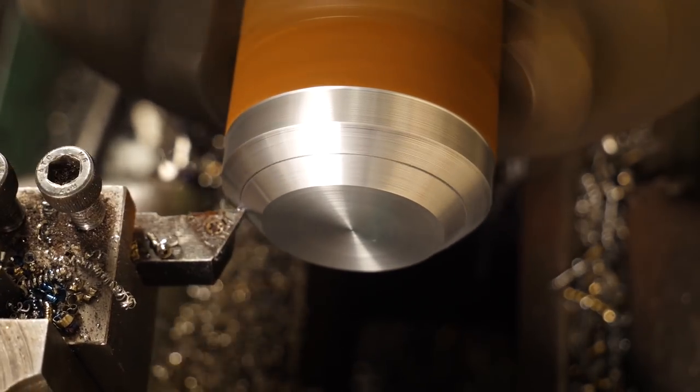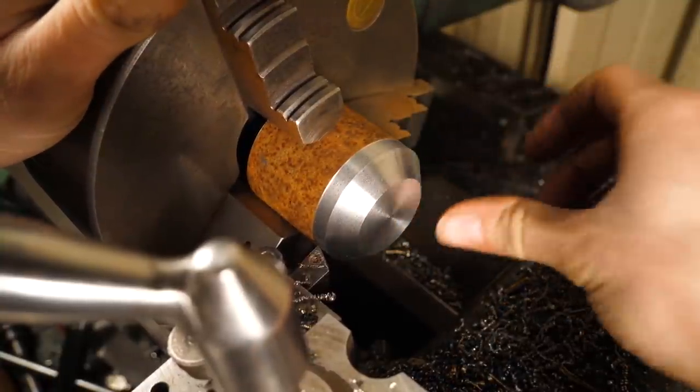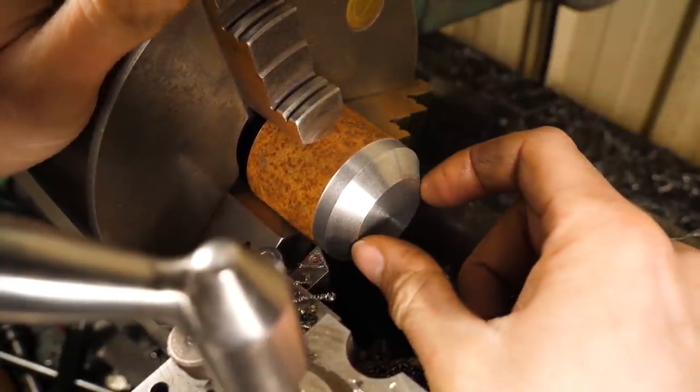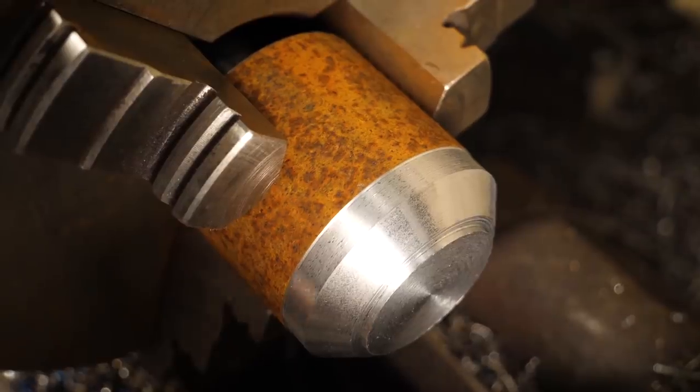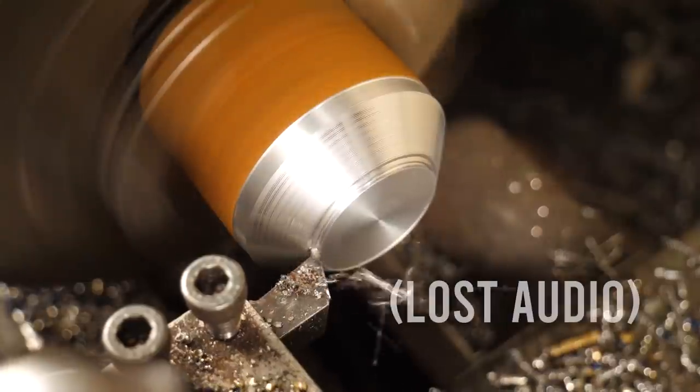I've deliberately cut a bigger taper than what I need. Now I need to face this down until I get to the right diameter on this small end. This shoulder is right on the minor diameter of the taper that I want. Now I just need to keep blending this taper in until I remove that step.